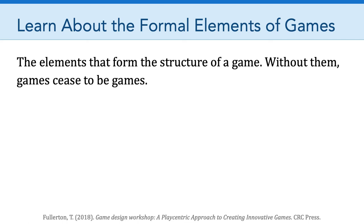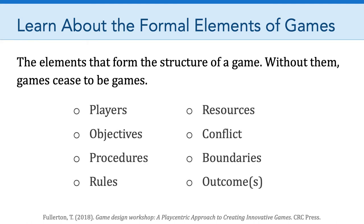She argues these are the elements that form the structure of a game, and without formal elements, games cease to be games. As you can see here, there are eight formal elements: players, objectives, procedures, rules, resources, conflict, boundaries, and outcomes. I want to draw your attention to three of them which are not seen in our definition of what makes a game a game — and those are procedures, resources, and boundaries. So Fullerton is giving us a more fleshed-out view of the structures of games and the elements we absolutely need in order to make a game a game.